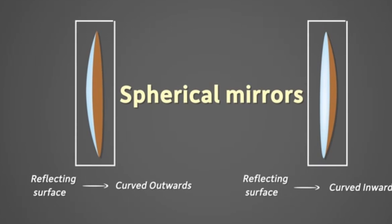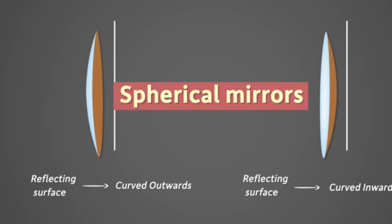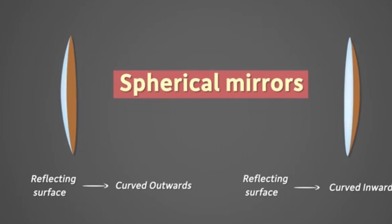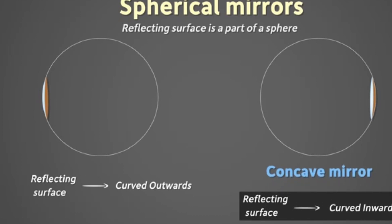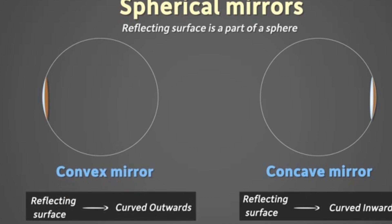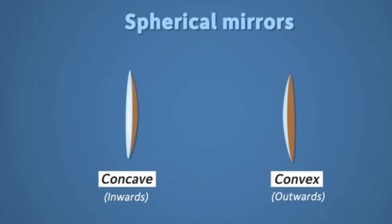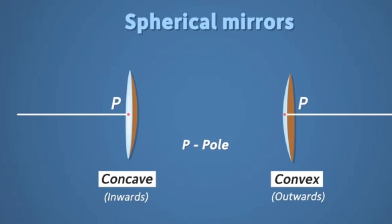Now why are these mirrors known as spherical mirrors? These mirrors are actually cut out from a sphere. If we complete the curve, we understand that the reflecting surface is part of a sphere. If you cut a small part and polish its outer surface so the inner surface becomes reflecting, it is a concave mirror. But if its inner surface is polished, it becomes a convex mirror.